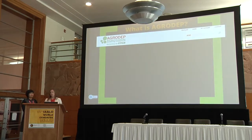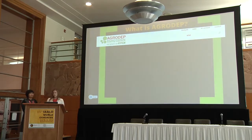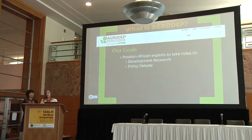So what is Agridep? It stands for the African Growth and Development Policy Modeling Consortium. The goal with Agridep is to form a network for African researchers where we have capacity building. Our goals are to give tools to African researchers so that they can take important and prominent roles in development research and in the policy debate. A lot of the policy debate comes from outside of Africa and we think it's important to have more of a role inside of Africa.